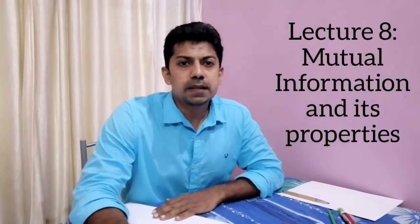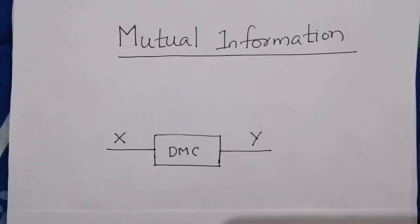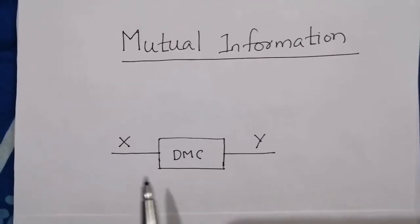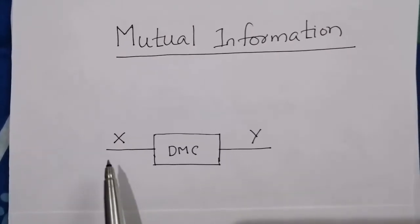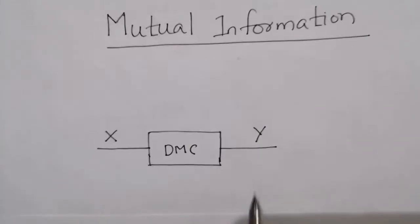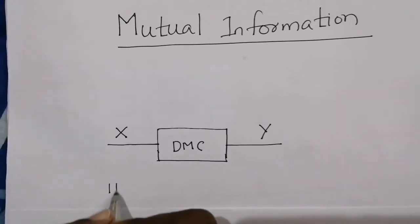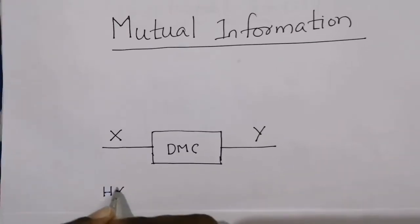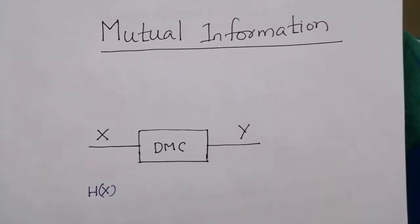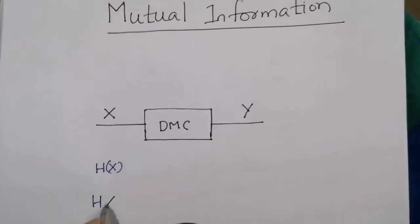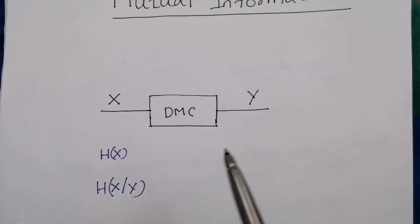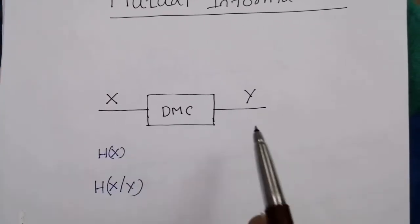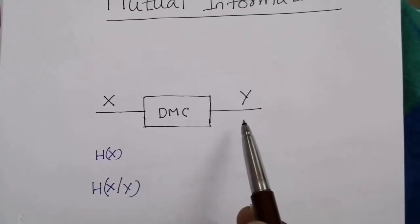Hello everyone, today we will discuss mutual information and its properties. For studying about mutual information, consider a discrete memoryless channel with input symbol x and output symbol y. We know that h(x) is the prior uncertainty about the channel input, and h(x|y) is the uncertainty about the channel input after observing the channel output y.